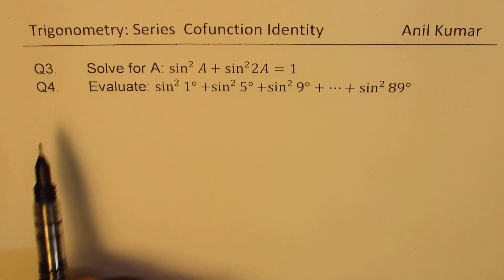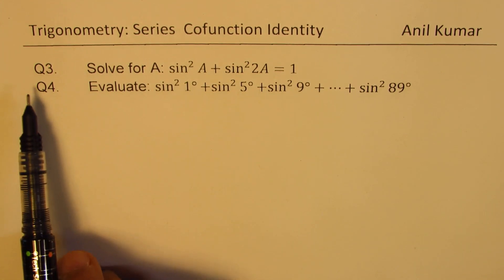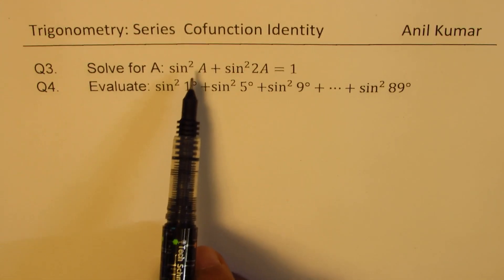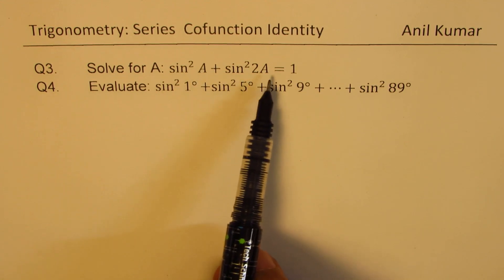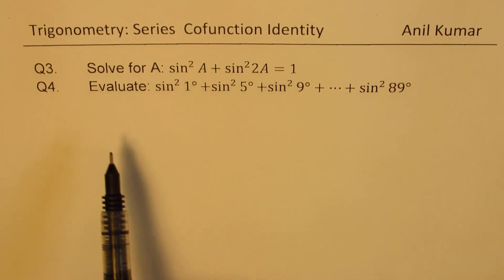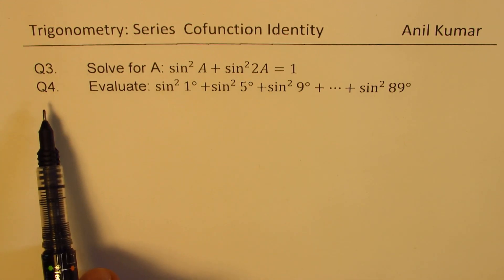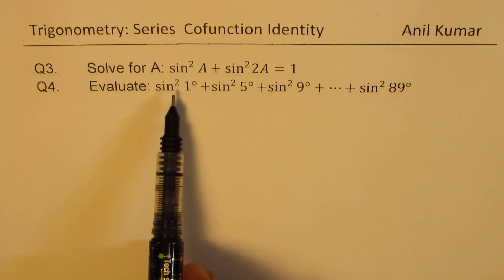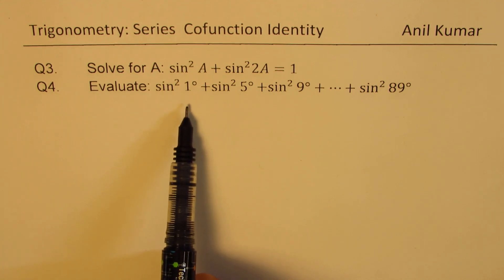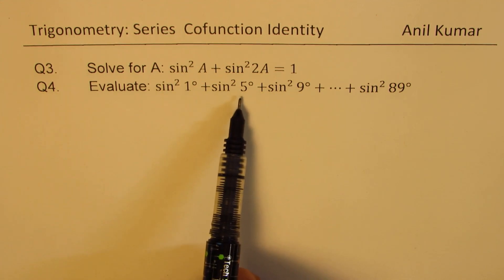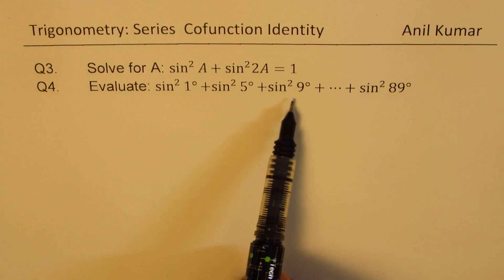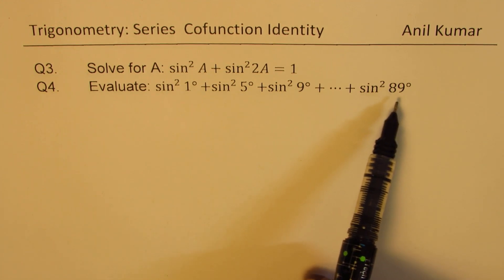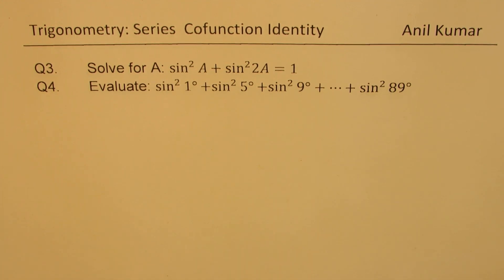We have two related questions. Question 3 is: solve for a where sine square a plus sine square 2a equals 1. And question 4 is: evaluate sine square 1 degree plus sine square 5 degrees plus sine square 9 degrees and so on to sine square 89 degrees.